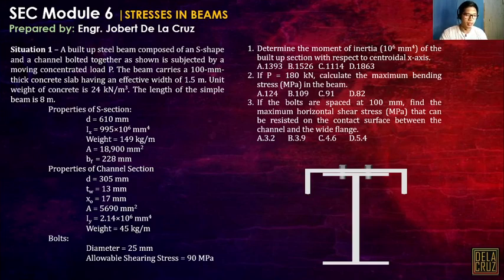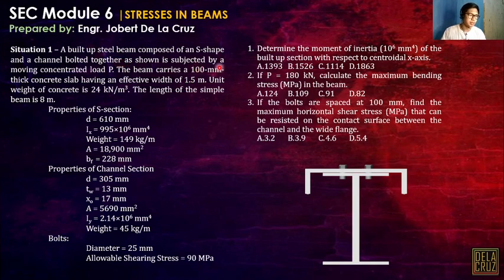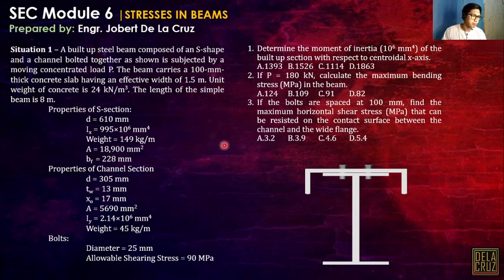Good day everyone. This is another module for structural engineering and construction. Here, I will be discussing and solving a sample problem involving stresses in beams. The situation: a built-up steel beam composed of an S-shape and a channel bolted together is subjected by a moving concentrated load P. The beam carries a 100 mm thick concrete slab having an effective width of 1.5 meters. The unit weight of the concrete is 24 kN per cubic meter and the length of this simple beam is 8 meters.